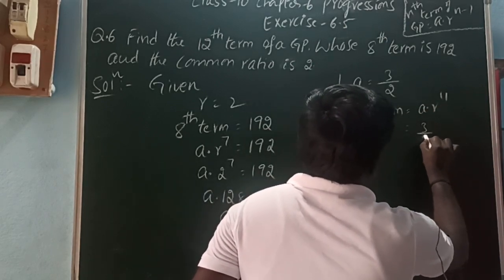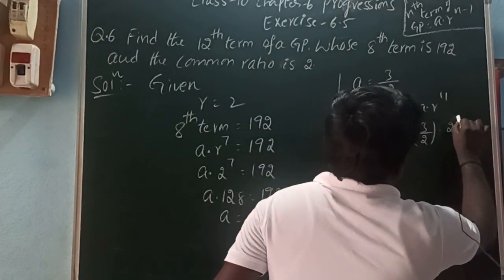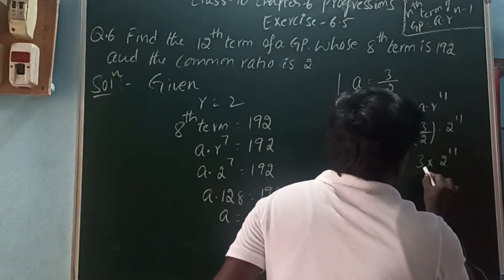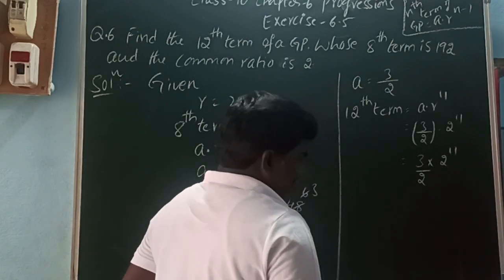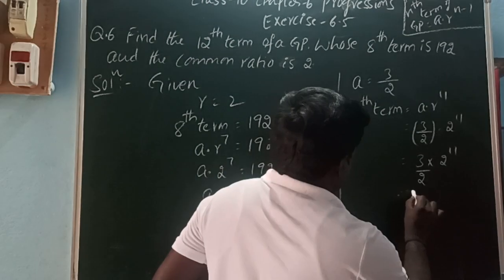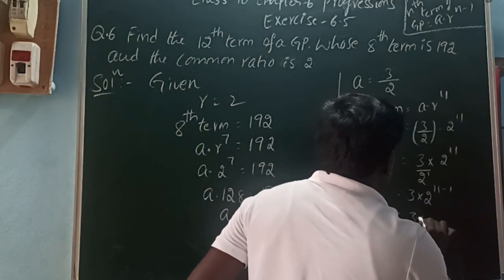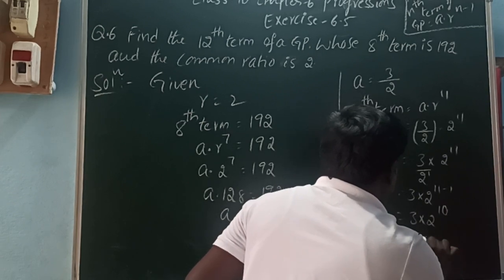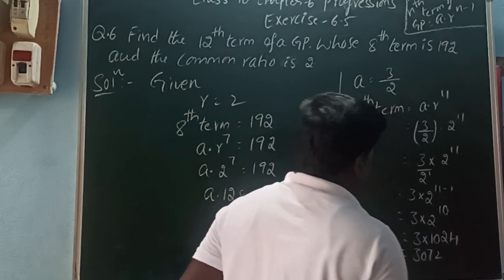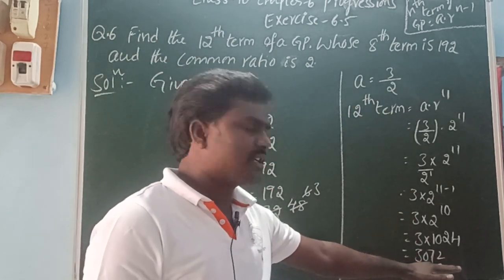A is 3 by 2, into R which is 2, to the power 11. That is 3 into 2 to the power 11 by 2. Using the rule A power M by A power N equals A power M minus N, that is equal to 3 into 2 to the power 10. 2 to the power 10 is 1024. So the 12th term of the given GP is 3072.